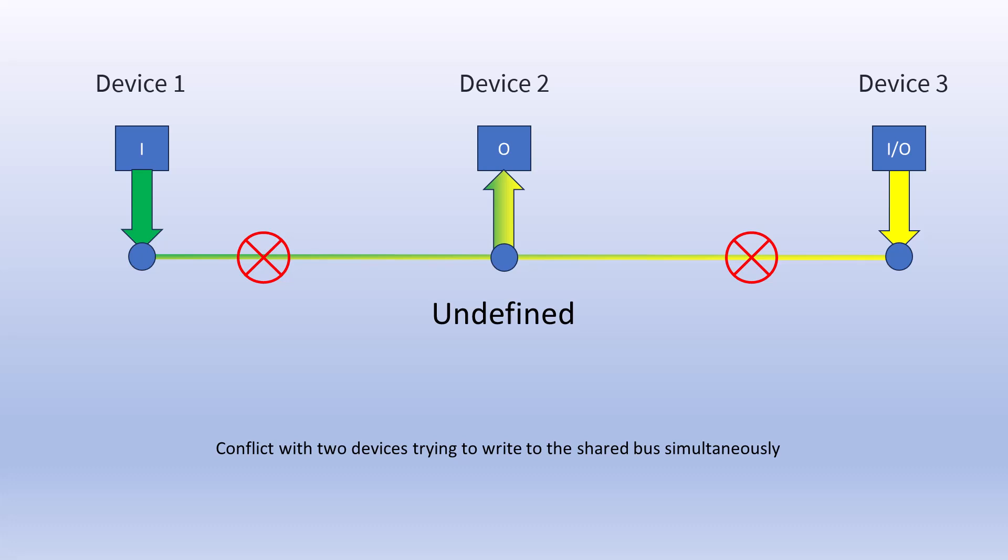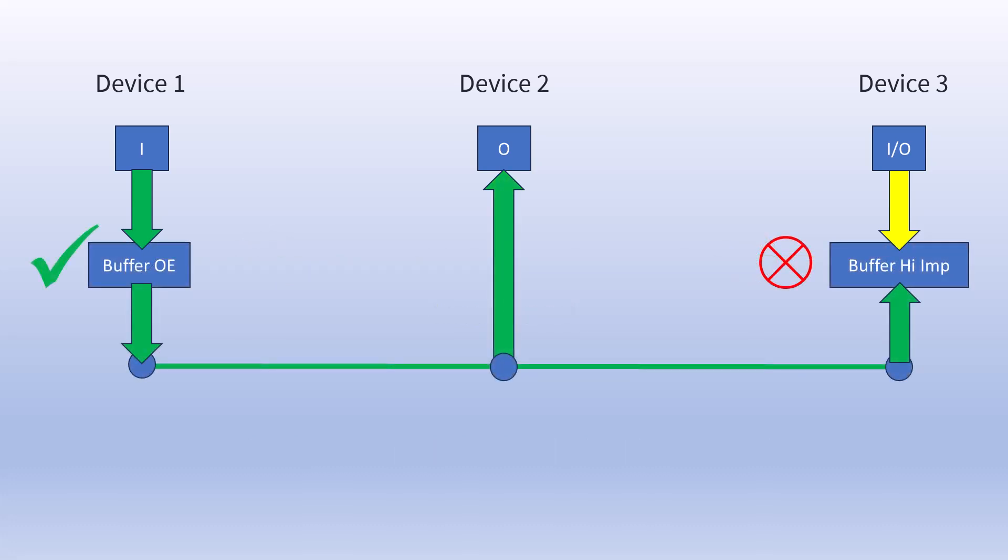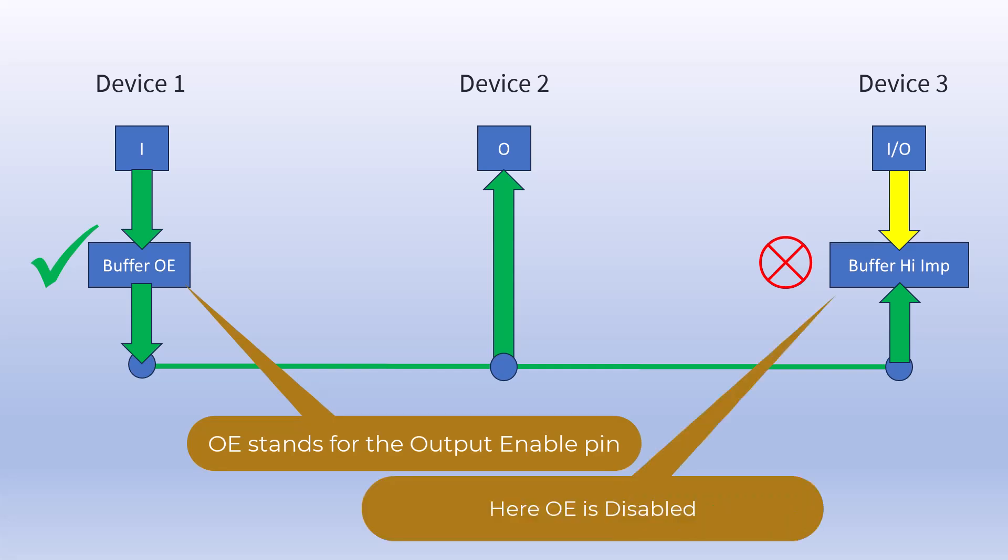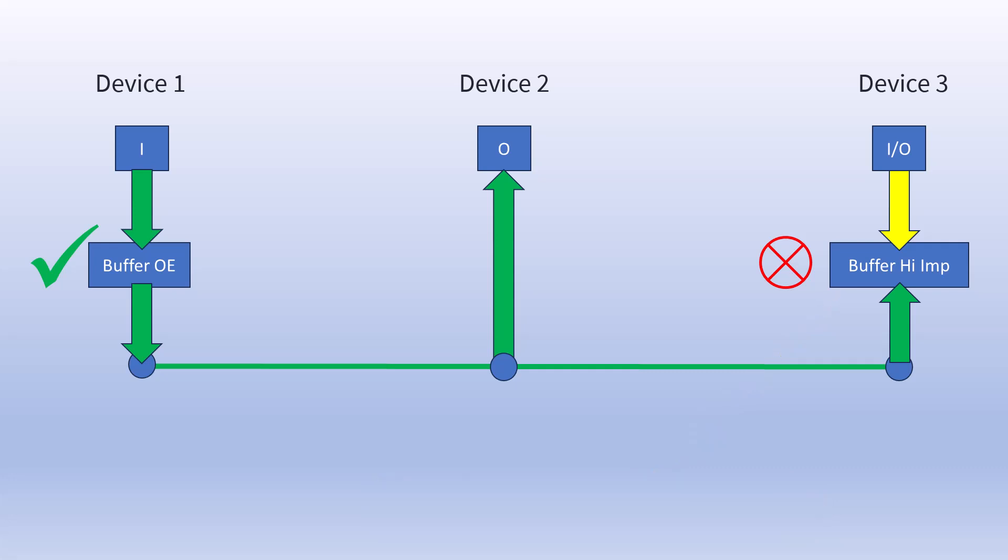To prevent this issue, we use an IC such as a bus transceiver or buffer to coordinate access to the bus. In this example we can see that the first buffer is allowing the first device to write to the bus while the last buffer is in a high impedance state, thus blocking the output signal of the third device and also preventing the signal generated by device number one from interfering with device three's I/O pins. This ensures that the bus signals are clean.